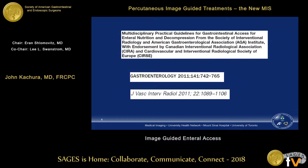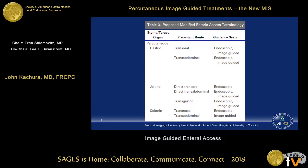The Society of Interventional Radiology and the American Gastroenterological Association got together and published multidisciplinary practical guidelines for GI access for enteral nutrition and decompression. These were simultaneously published in Gastroenterology and JVR in 2011, and they tried to propose a modified enteric access terminology system where you look at the target organ, the placement route — for example, trans-oral or trans-abdominal for G-tube — and the guidance system used. But this terminology system can get pretty complicated.